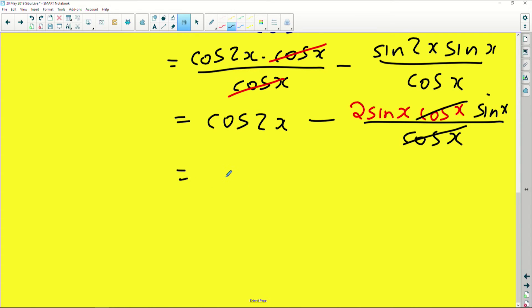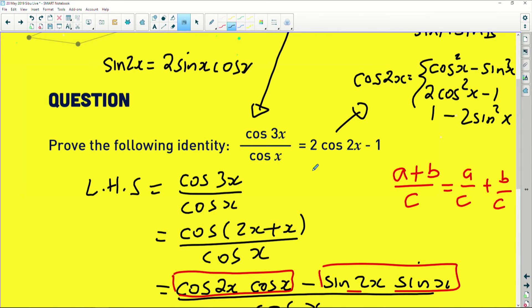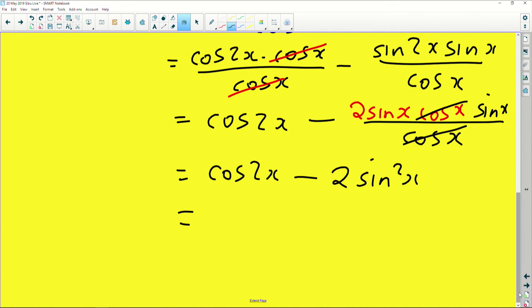If you simplify further, you will notice again we do have canceling terms. This cos x can cancel that cos x there, leaving us with something very interesting here: cos 2x minus 2 sine x sine x is actually 2 sine squared x.